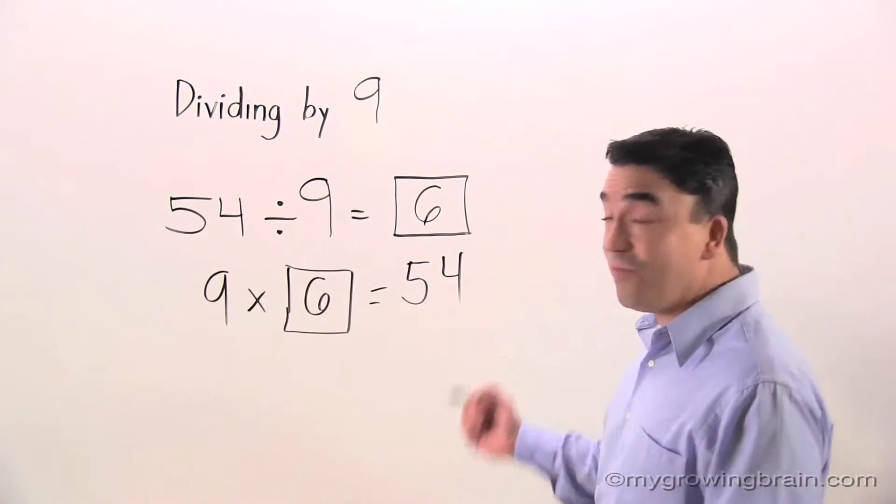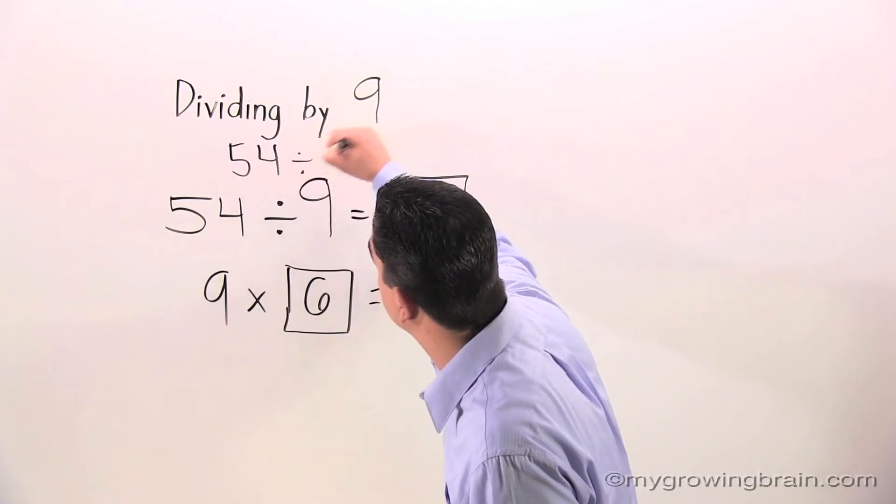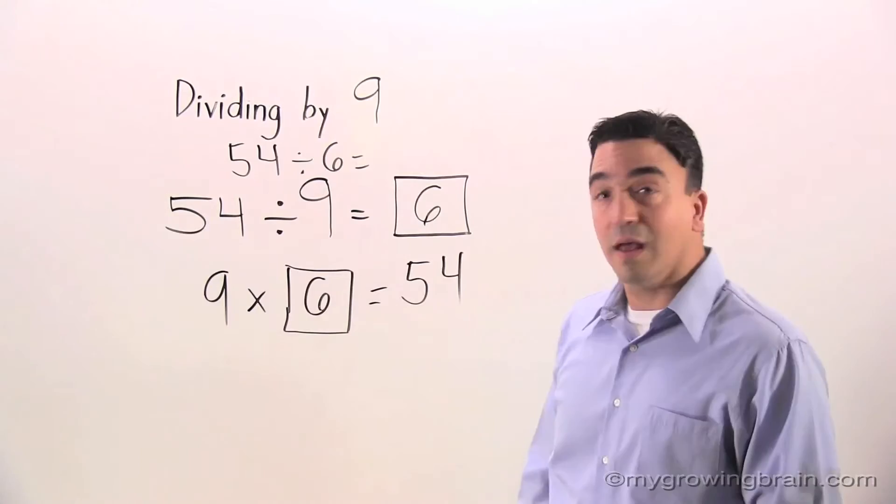54 divided by 9 equals 6. So I know that 54 divided by 6 is equal to 9. Watch.